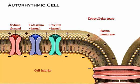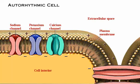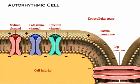Many transport channels are voltage-gated — they open and close in response to specific voltage levels across the membrane. The gap junction connects adjacent cardiac cells, allowing ions to pass between cells and creating a ripple effect of initiating depolarization in one cell, then another, and so on.